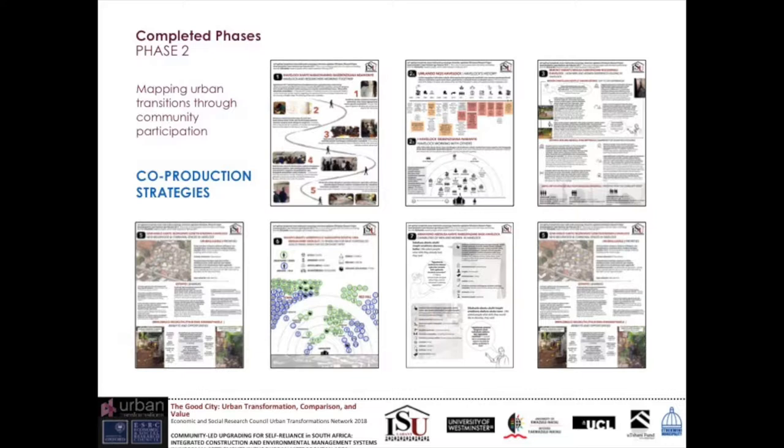Then we started phase two in November 2016. It lasted for a year and was completed in September/October 2017. This was a year-long phase to work with communities and introduce co-production strategies, using different tools such as photovoicing, photo mapping, and community events as tools to map urban transitions.